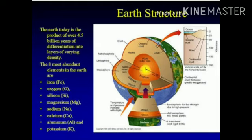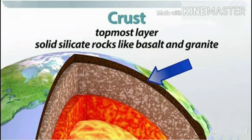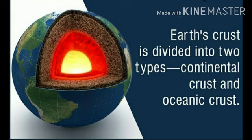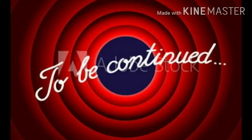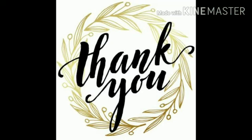Always remember, the earth today is the product of over 4.5 billion years of differentiation into layers of varying density. The eight most abundant elements in the earth are iron, oxygen, silicon, magnesium, sodium, calcium, aluminum, and potassium. These elements are found in the various layers of the earth's interior. So in this part we have studied about the crust, which is divided into continental crust and oceanic crust. We will continue in the second part. Thank you very much.